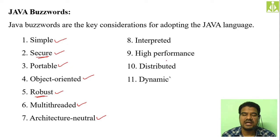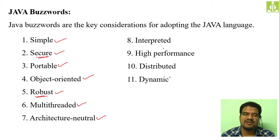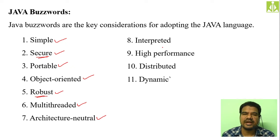Then we have 'interpreted.' So far whatever programming languages we have seen — like C and C++ — those are compiled programming languages. In order to translate high level language code or source code into executable code or object code, we use a compiler. What the compiler does is scan the entire program written for errors.